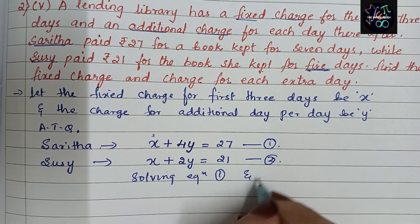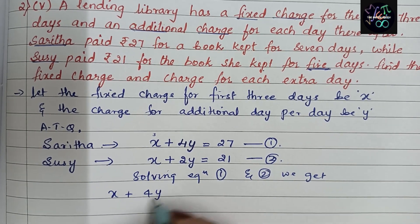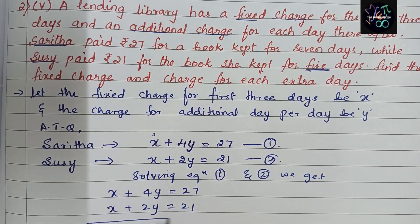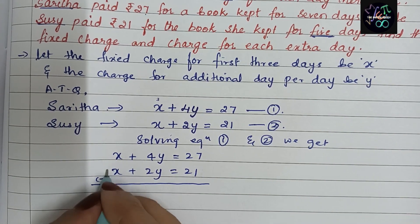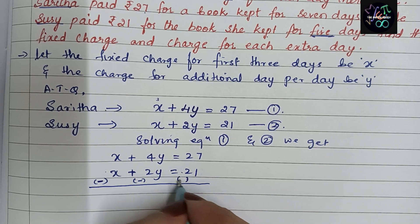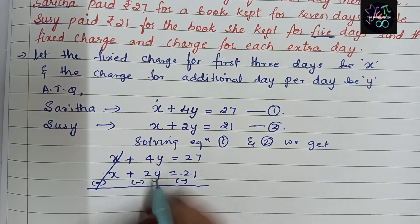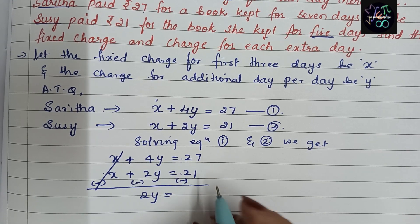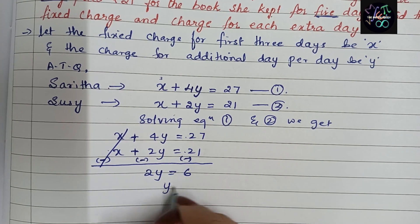Equation 1: x + 4y = 27. Equation 2: x + 2y = 21. Since both equations have the same sign for x, we subtract Equation 2 from Equation 1 by changing signs. This eliminates x. We get 4y minus 2y = 2y, and 27 minus 21 = 6. So 2y = 6, giving y = 3.